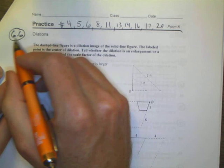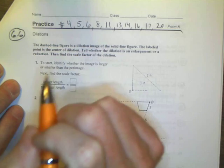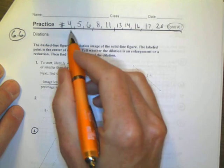Okay, this is Math 2, Unit 6, Lesson 6. Homework help for some questions here on your packet if you have Form K. Numbers 4, 5, 6, 8, 11, 13, 14, 16, 17, and 20.